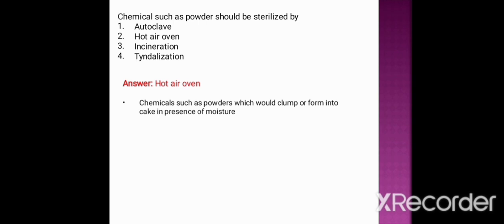In incineration, infective materials are turned into ashes by burning — if the powder is turned to ashes, we would be unable to use it further. So incineration is also not used to sterilize chemicals such as powder. Hot air oven sterilization is a process where moisture plays no role, so it should be used to sterilize chemicals such as powder.